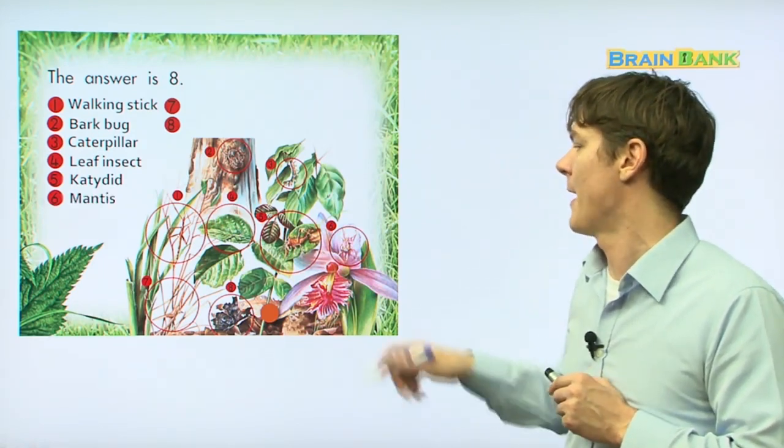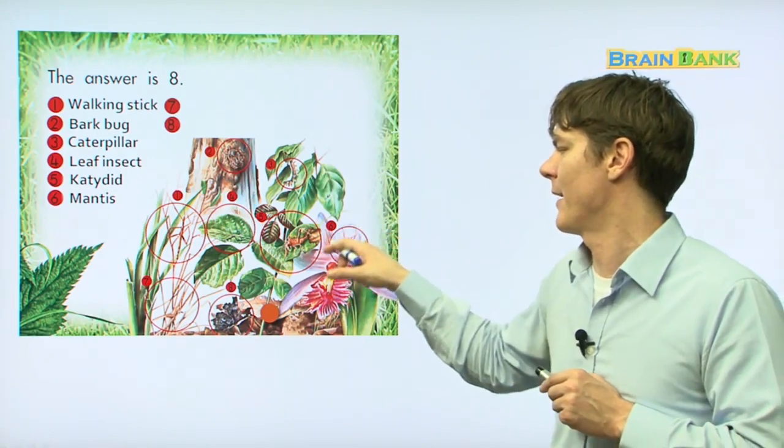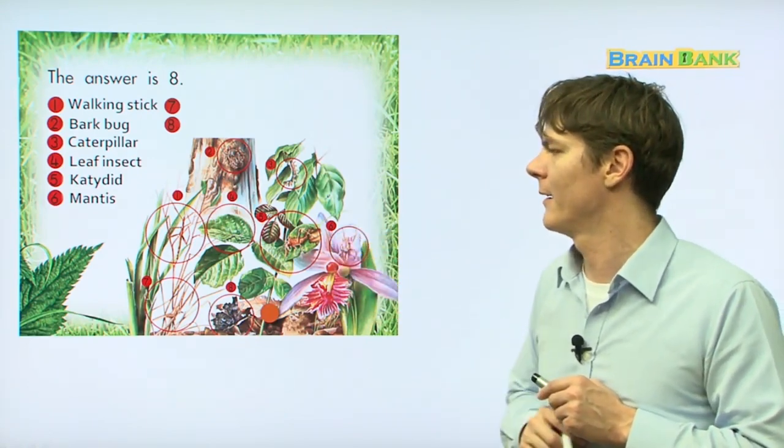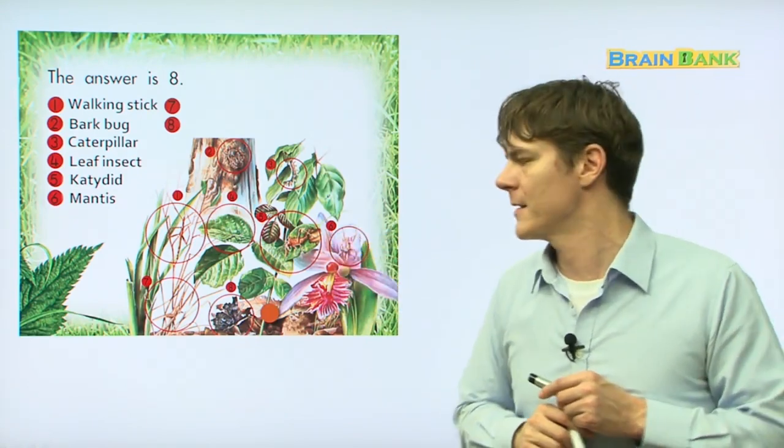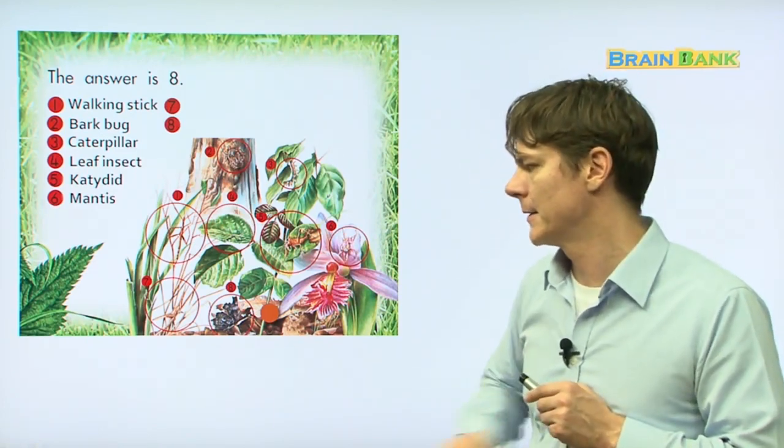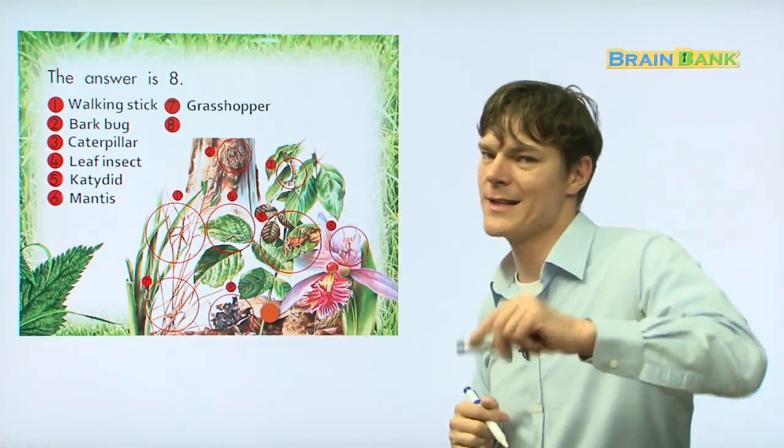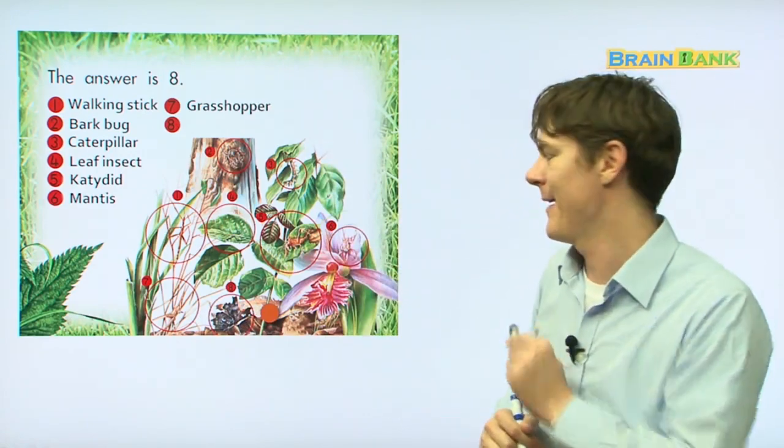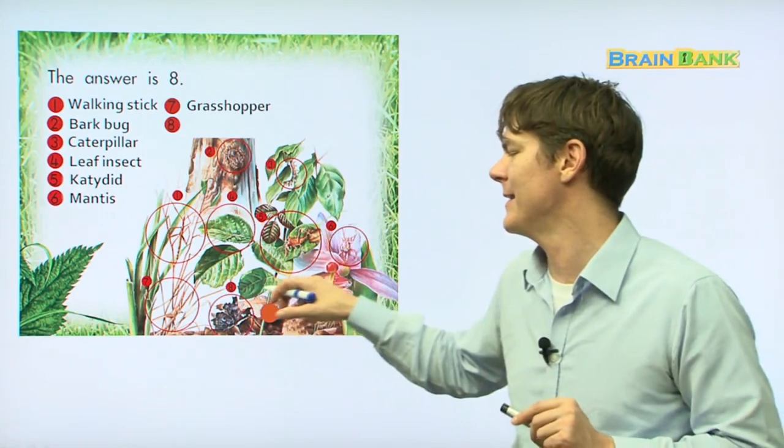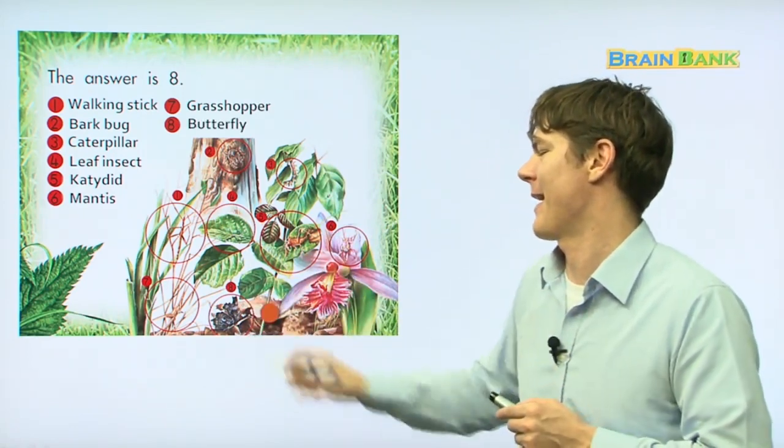And then we have a mantis. There's the mantis right there. And then we have, let's see, that's number six. Number seven, the grasshopper. Bing, bong, bang. Everybody, grasshopper. And the last one is the butterfly. That's it.